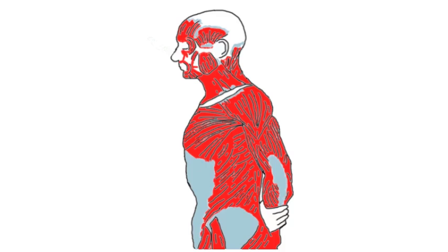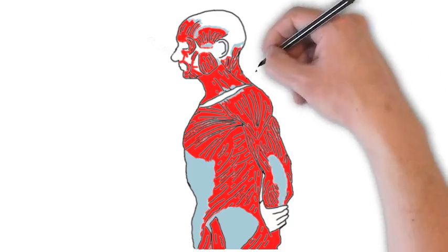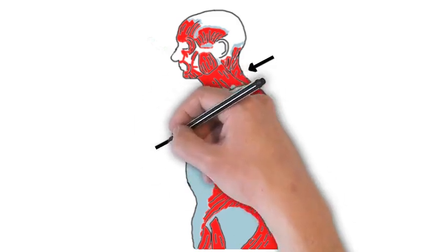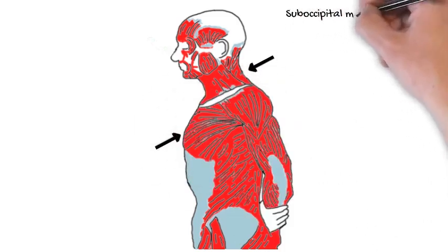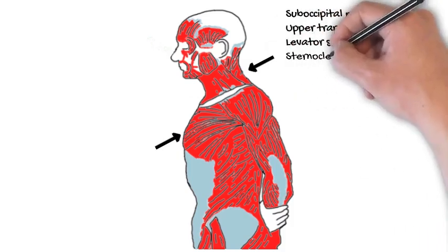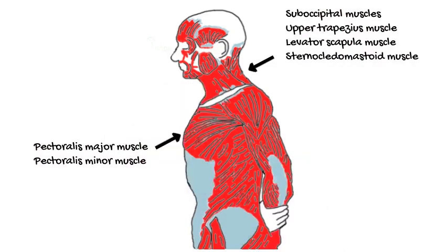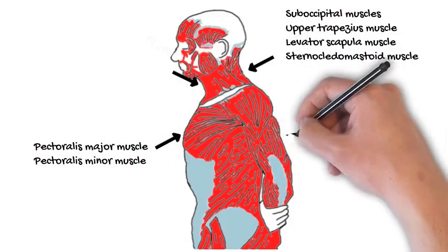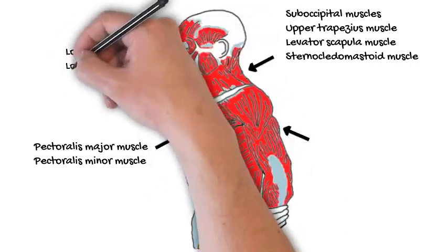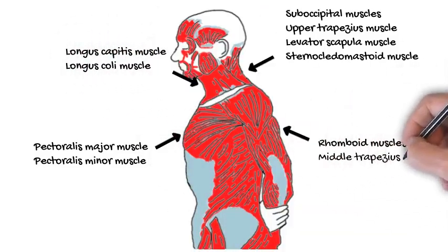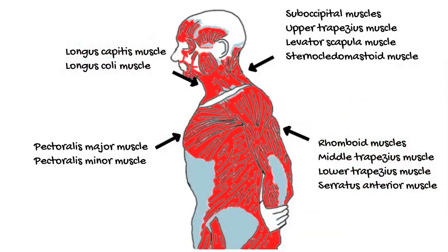As upper-crossed syndrome progresses, muscles along the sides and back of the neck and in the chest become chronically tight. For these muscles to be active and tight, their opposite muscle must relax. This allows the deep flexor muscles along the front of the neck and the middle back muscles to become weak and lengthened.